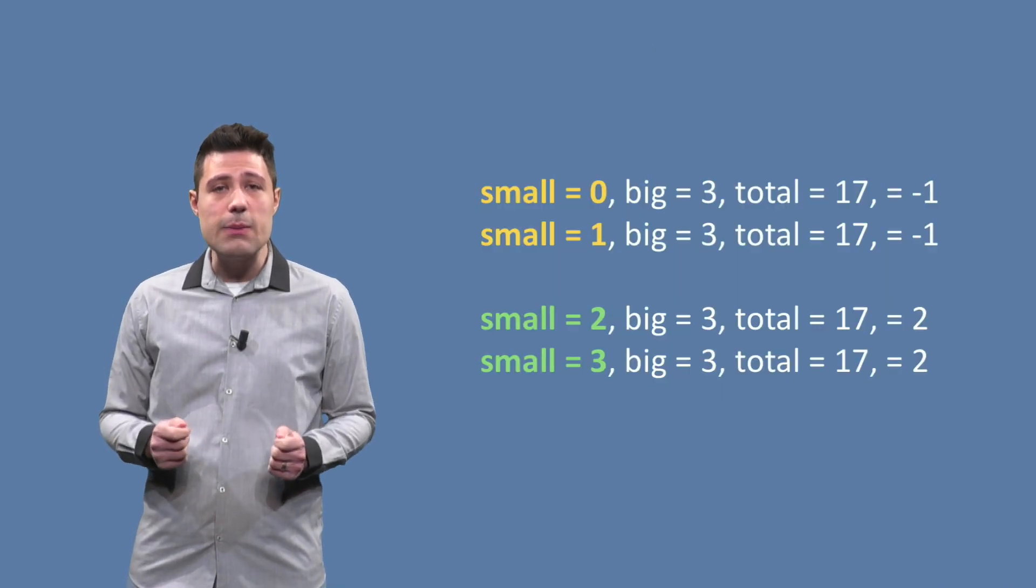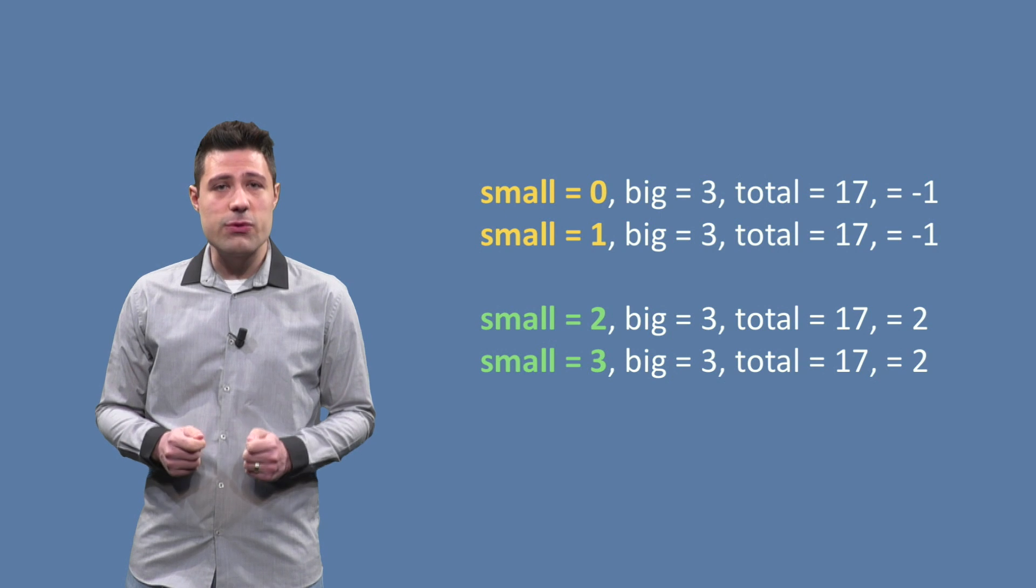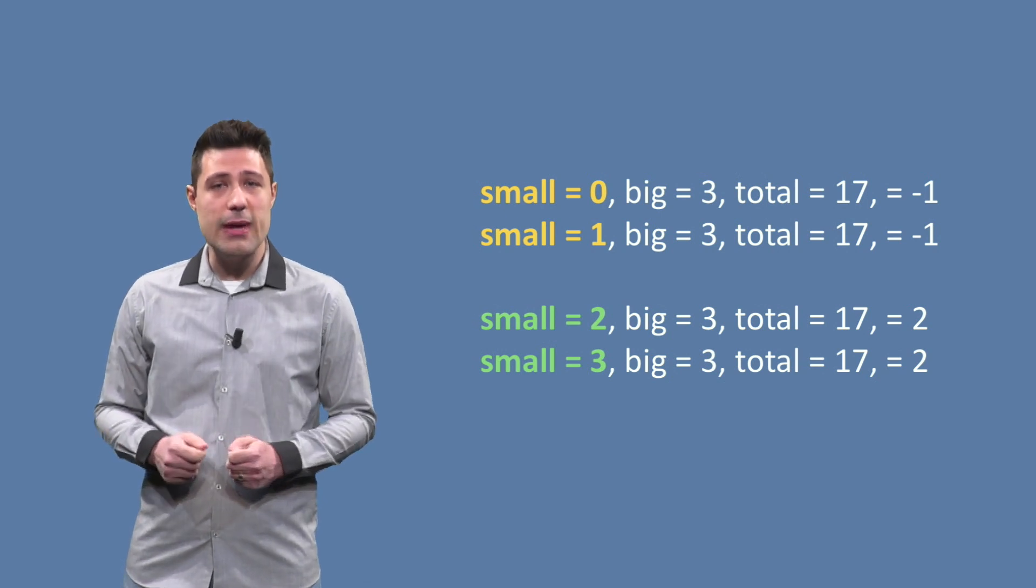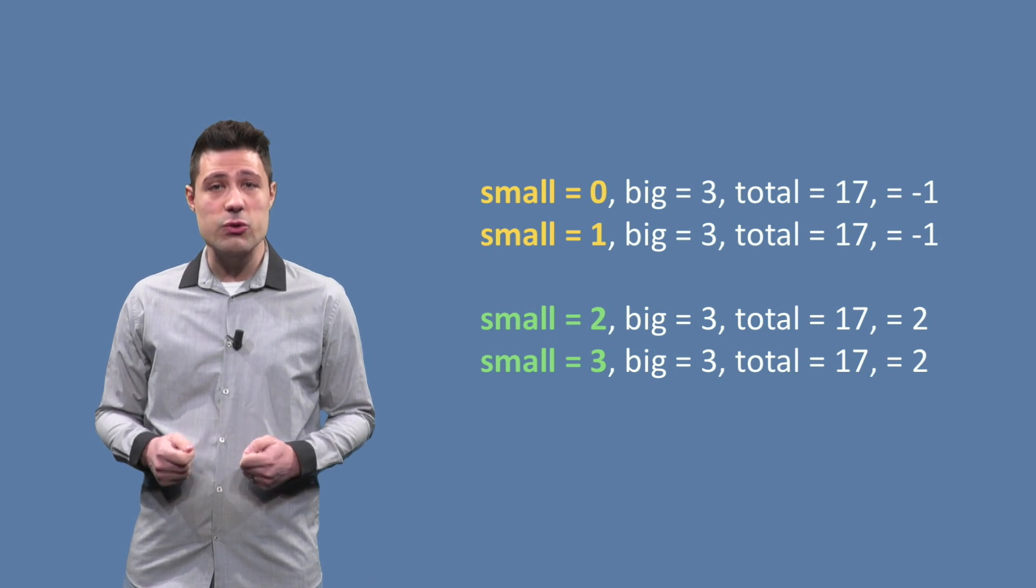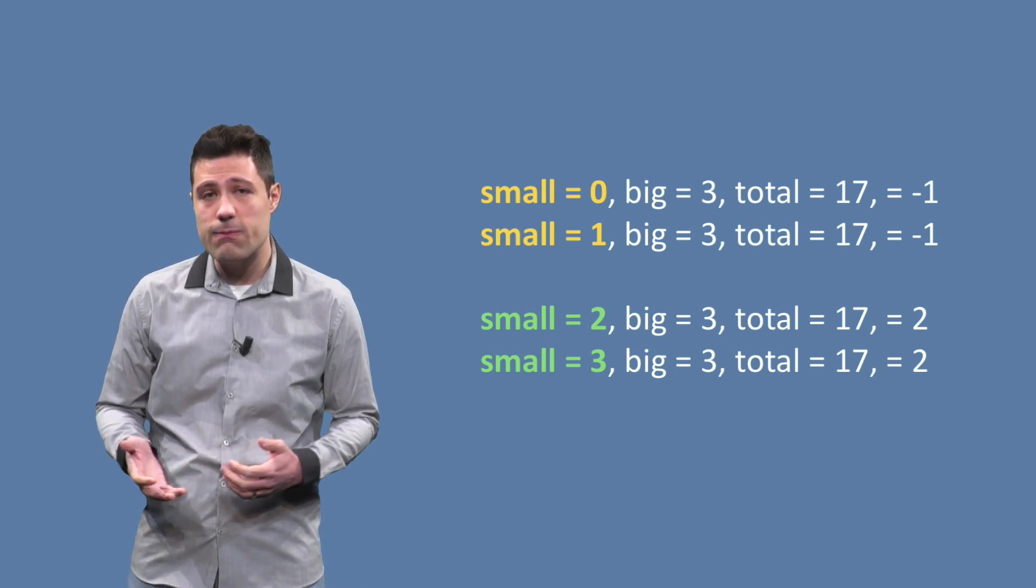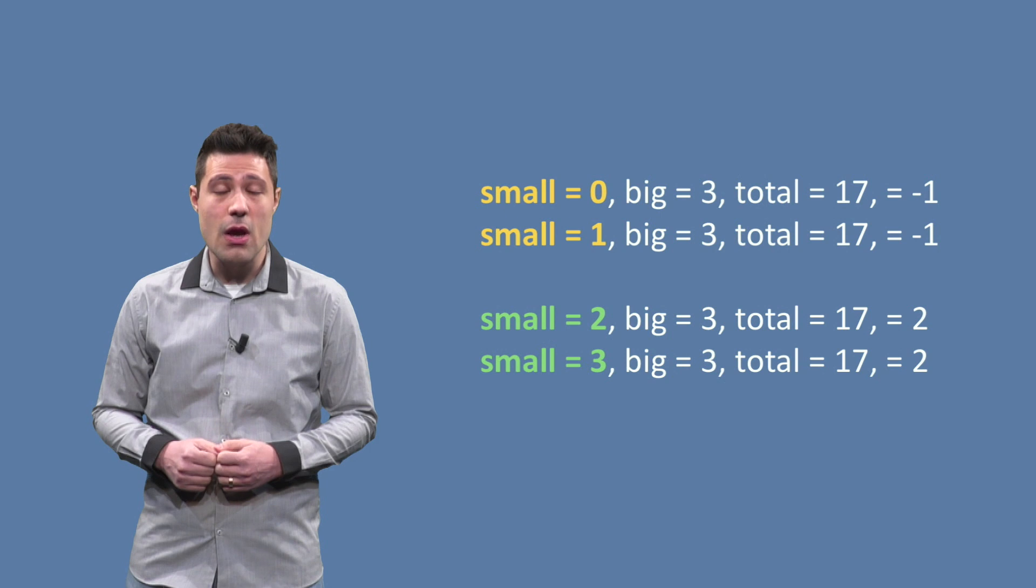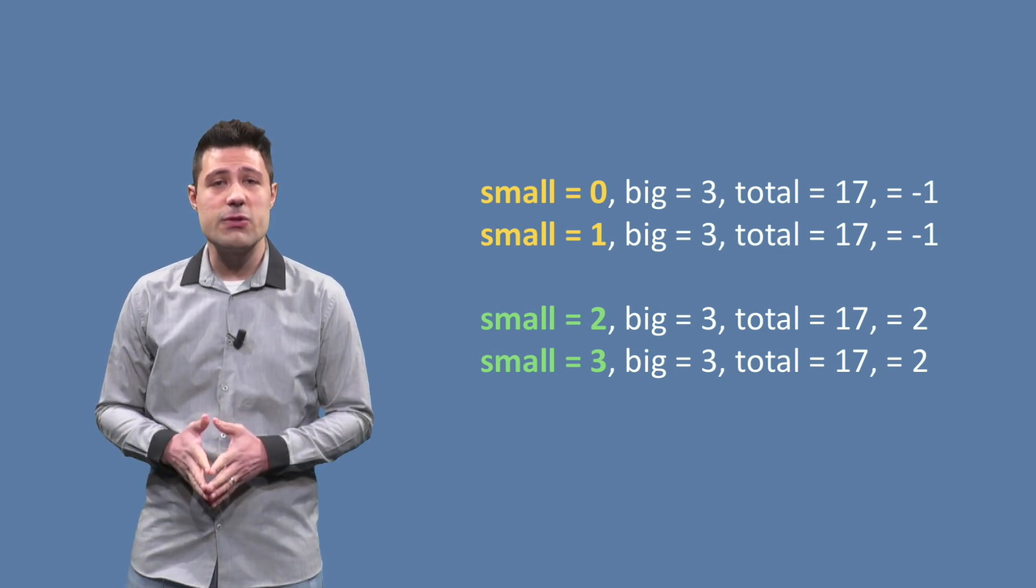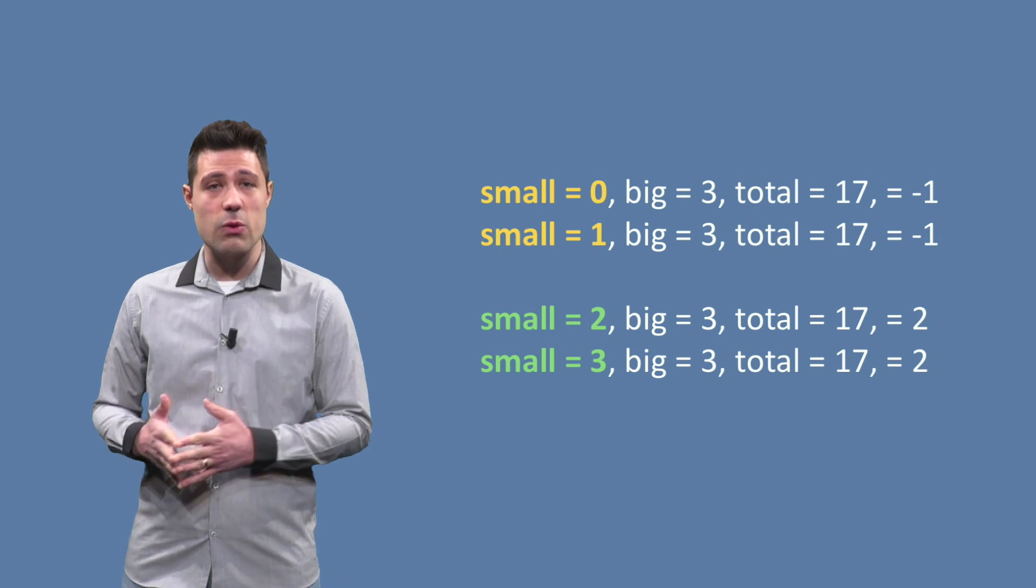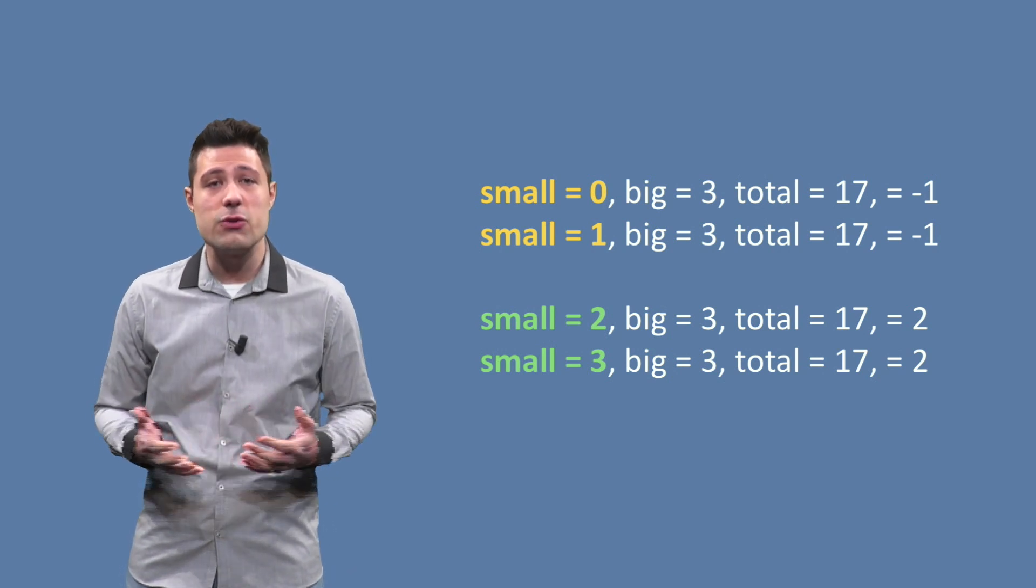Let's look closer to the buggy input. Given that we have total equals 17 and big equals 3, the small needs to be greater than or equal to 2, like 3, 4, 5, etc., for this instance to have a valid solution. If the small were equal to 1 or 0, the output would be minus 1.